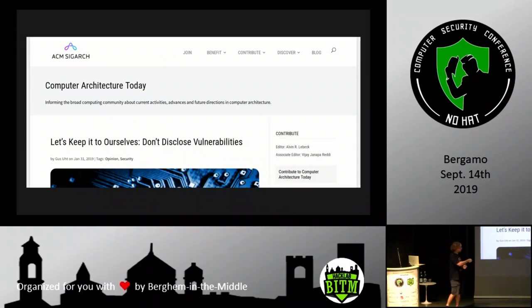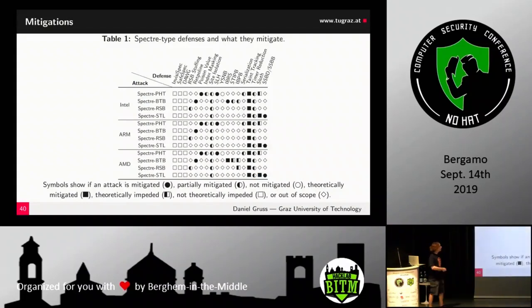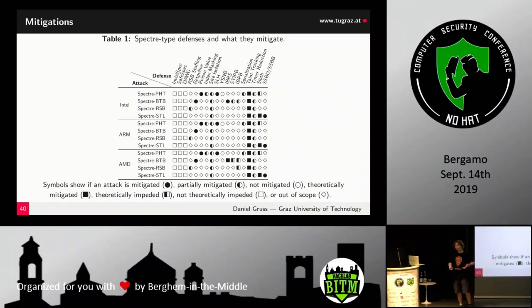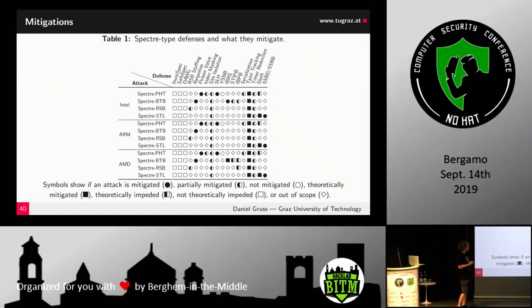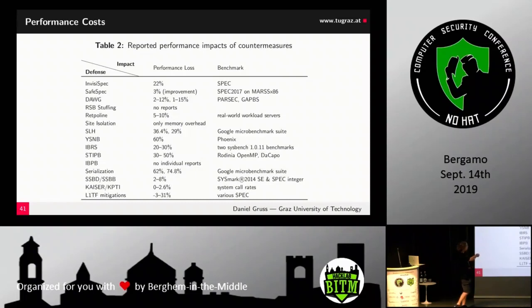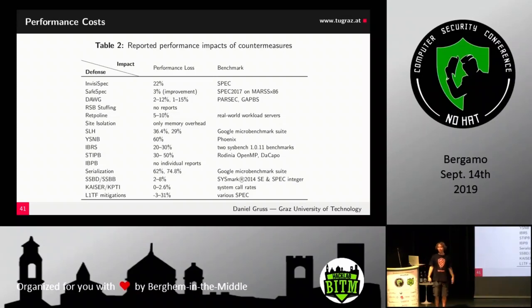The real mitigations picture is frustrating — many empty squares and circles indicating incomplete mitigations. Complete mitigation requires combining several countermeasures, and all of them cost performance. Just to mitigate Spectre V2, they recommend three countermeasures, sometimes a fourth. Adding all of them together costs significant performance.